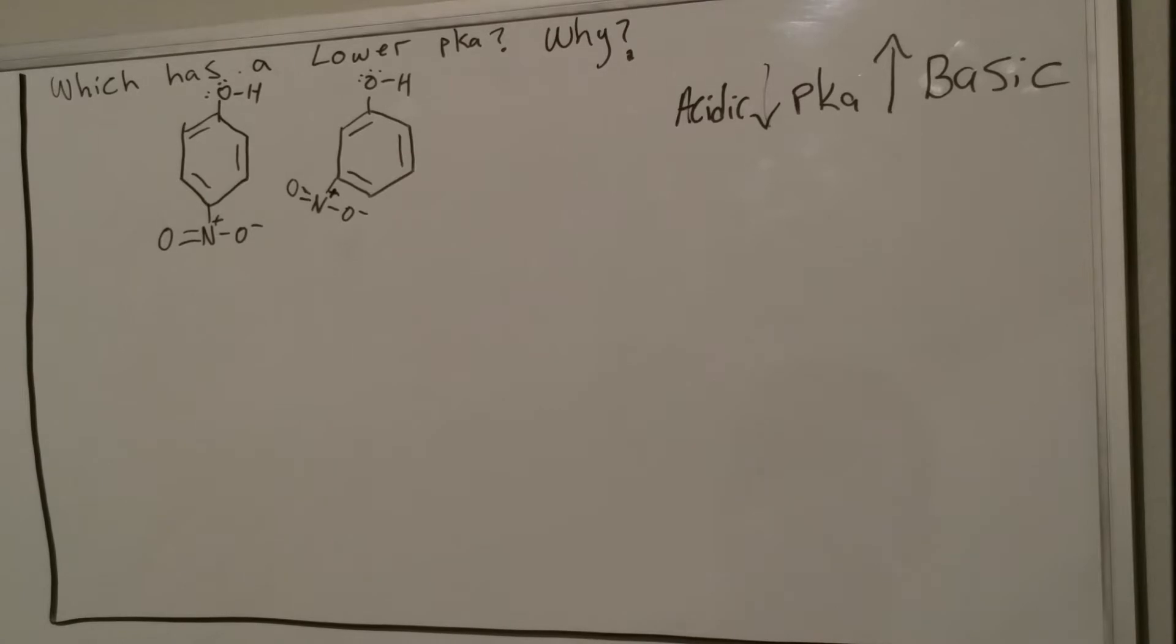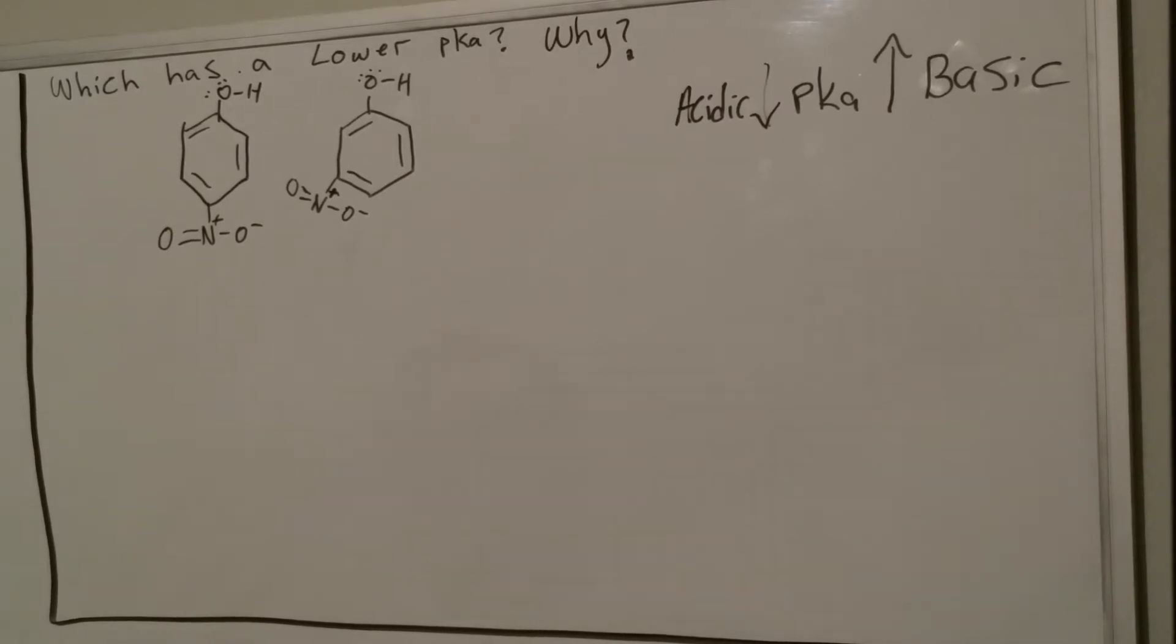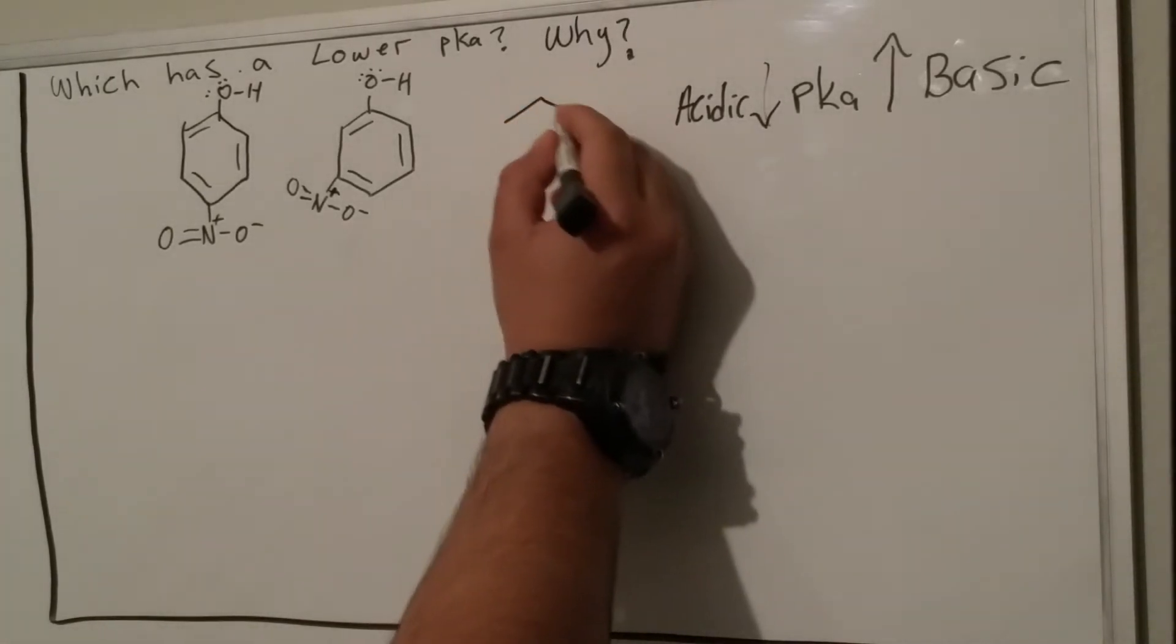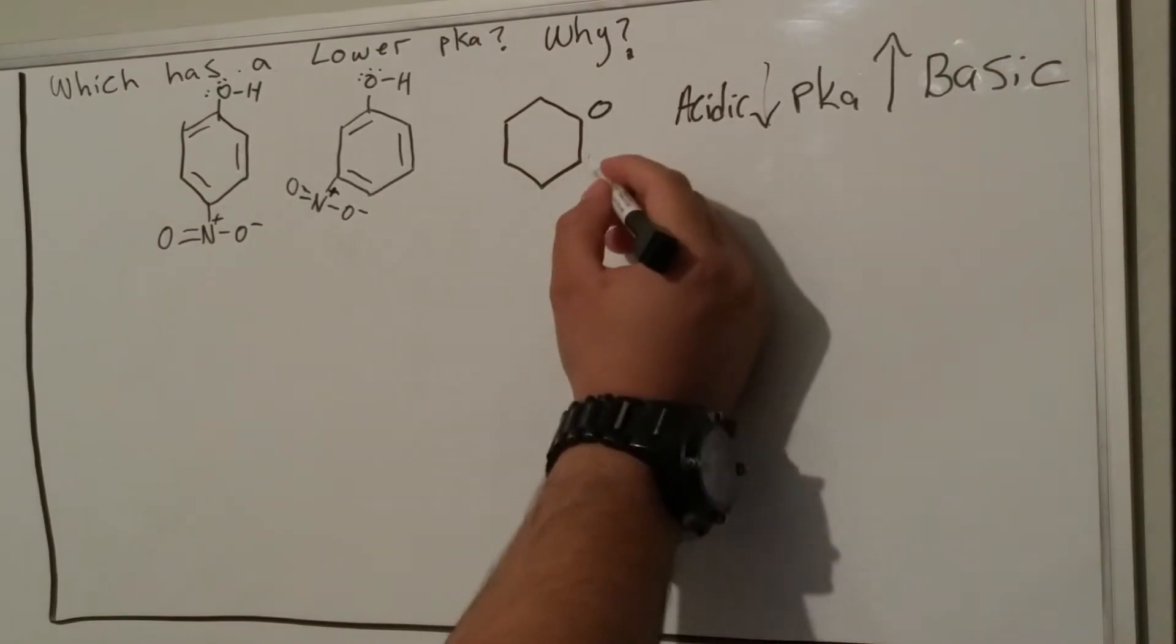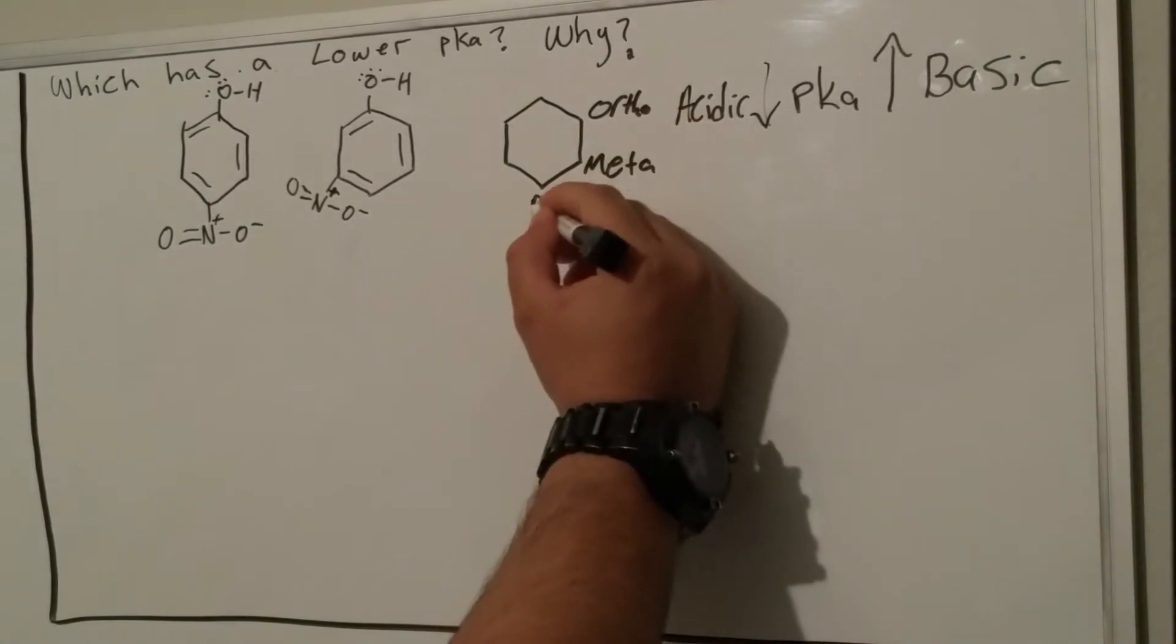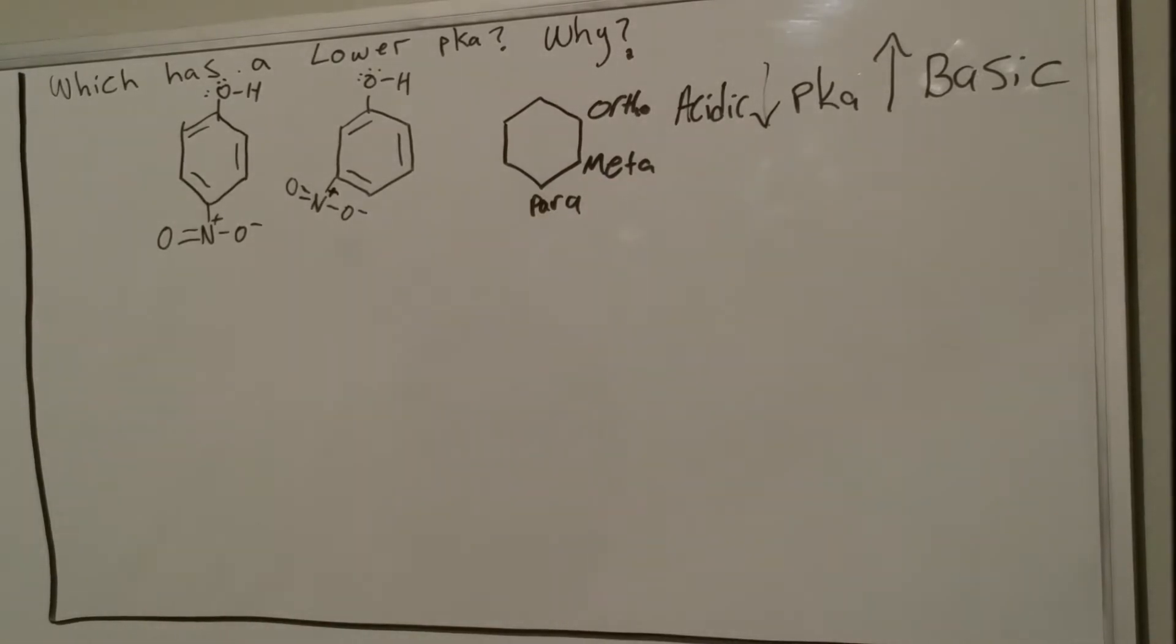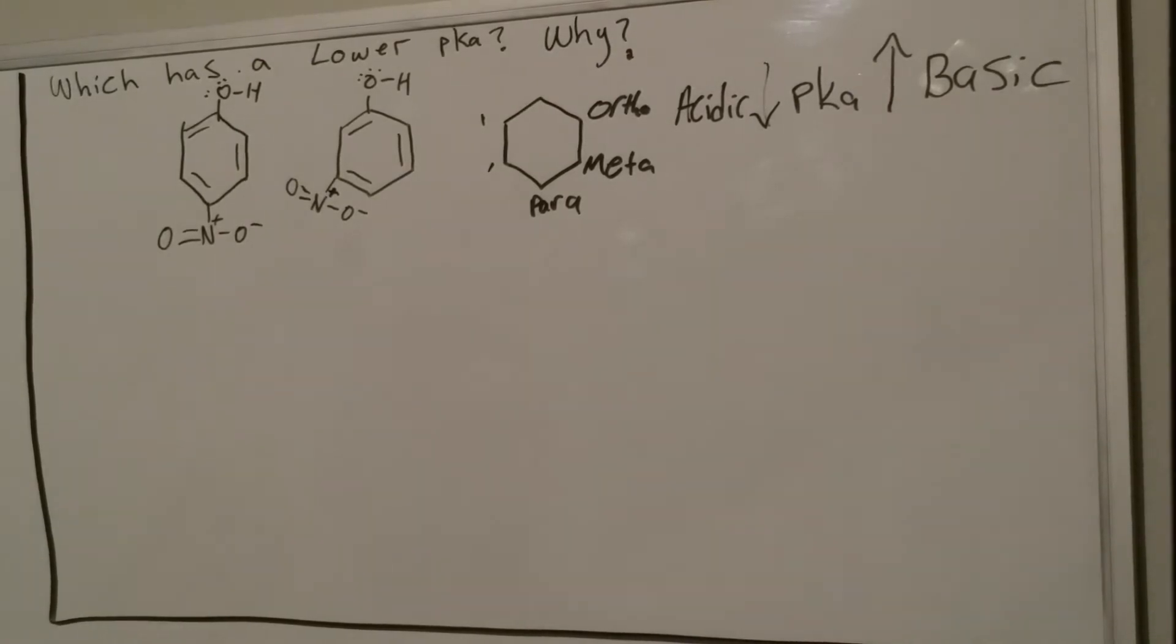This question is asking which has a lower pKa: a molecule with a nitro group on the para position or the molecule with it on the meta position. Remember, on an aromatic ring this is ortho, this is meta, and this is para. Same thing on this side.